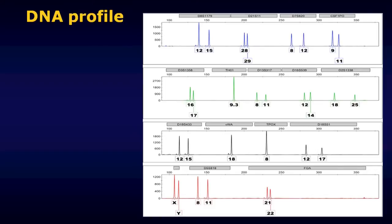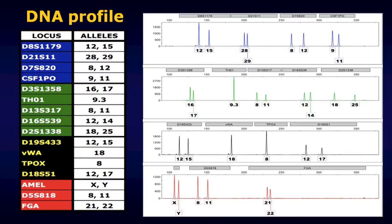The image here is an electropherogram that I've shown in others of this video series. These automated STR test results get easily translated into a series of numbers that we call a DNA profile. But perhaps even more importantly, that DNA profile information lends itself very well to entry into a database. This series of locus names and associated numbers can be very easily entered into a database, and that's been recognized for about 10 years, back to the mid-1990s.